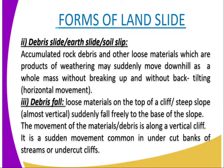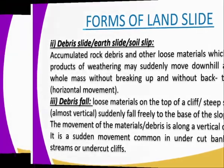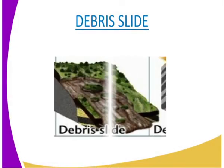Loose materials on top of a very steep slope fall almost vertically and freely to the base of the slope. The movement of the debris material is around a vertical cliff. It is a sudden movement common in undercut banks of streams or undercut cliffs. You can see how they look like — the debris slides.